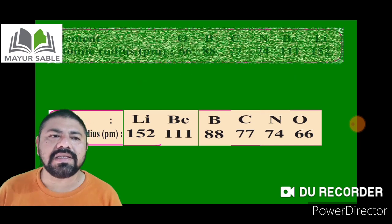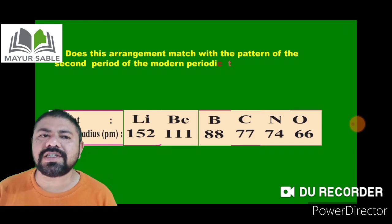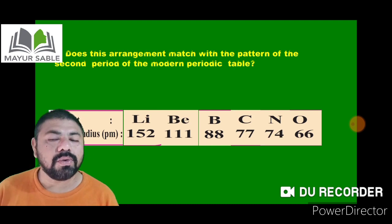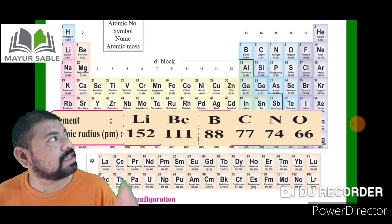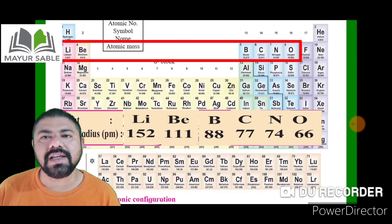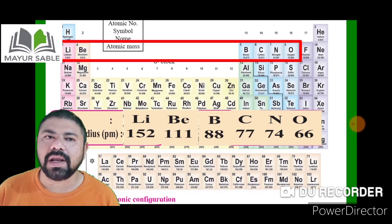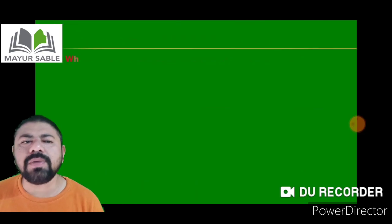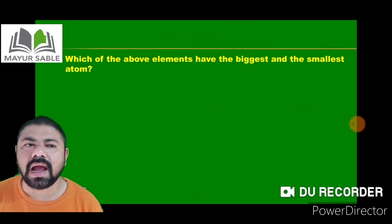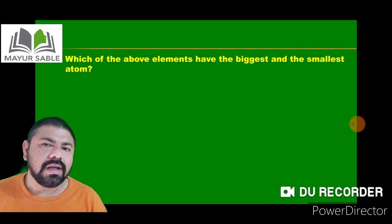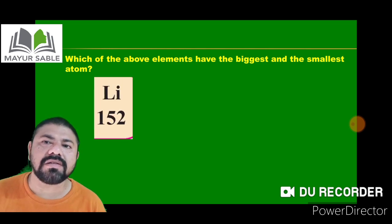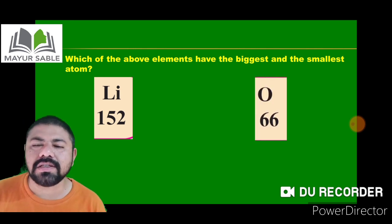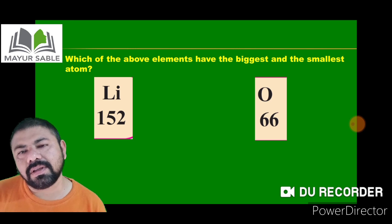The next question asks whether this arrangement matches the pattern of the second period in the modern periodic table. Looking at the periodic table, the same series is maintained in period 2: lithium, beryllium, boron, carbon, nitrogen, oxygen. Lithium has the biggest atom with an atomic radius of 152 pm, and oxygen has the smallest atom with an atomic radius of 66 pm.